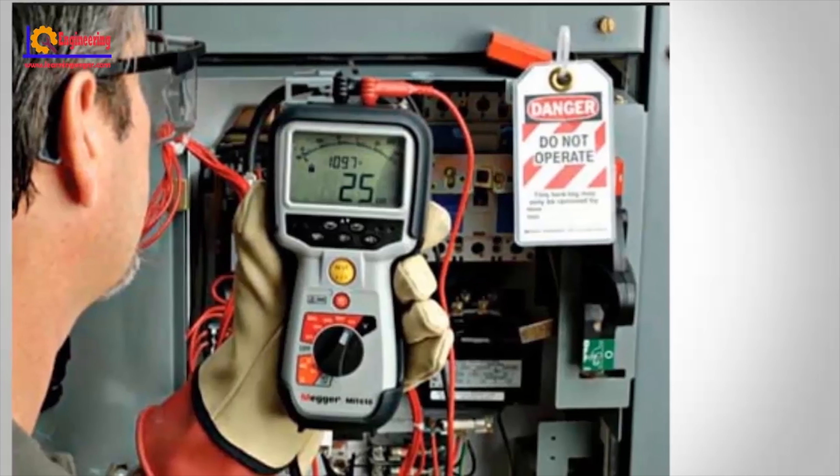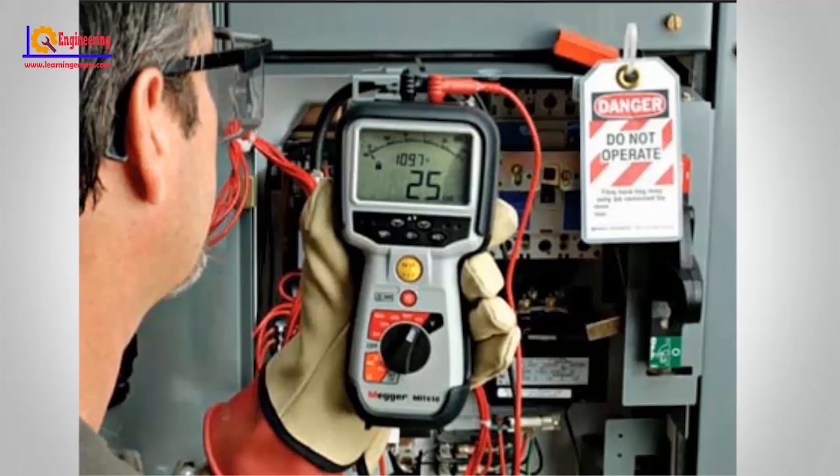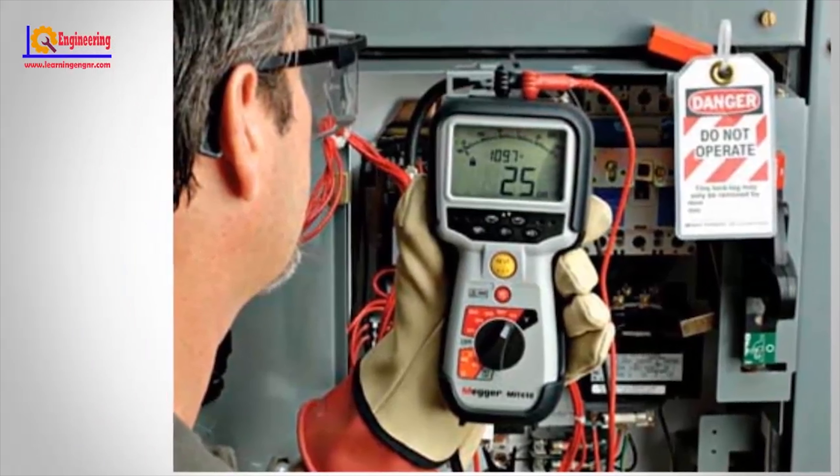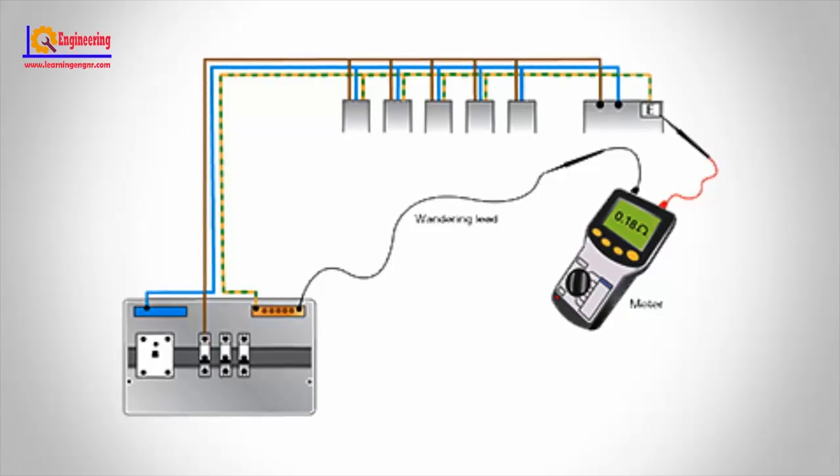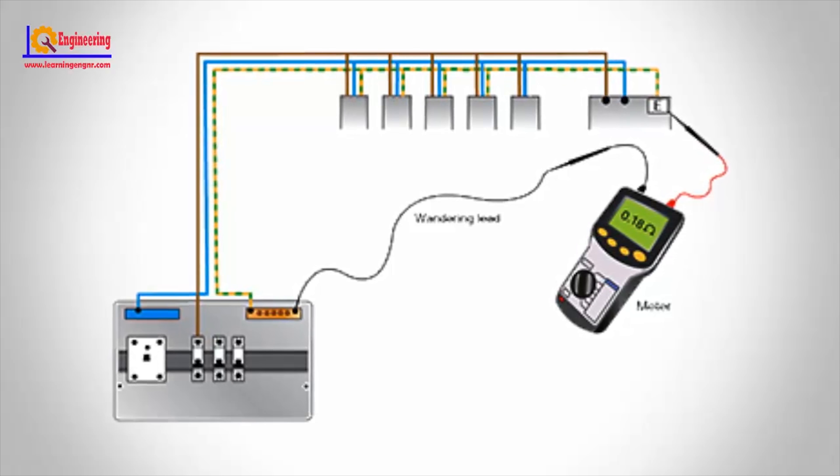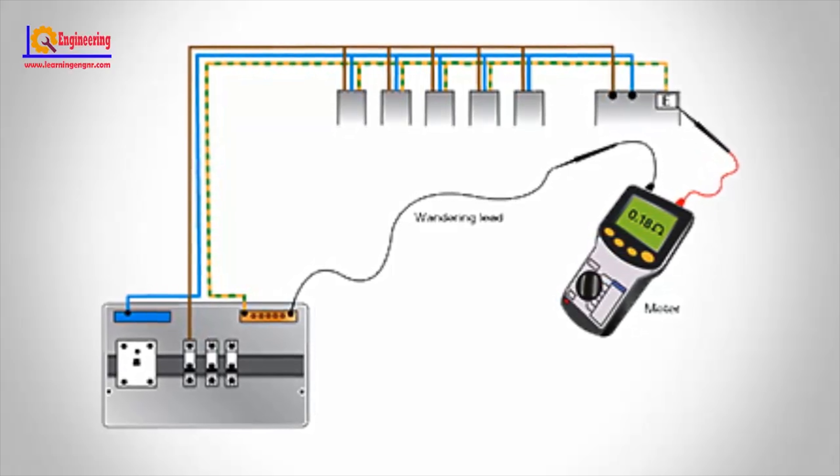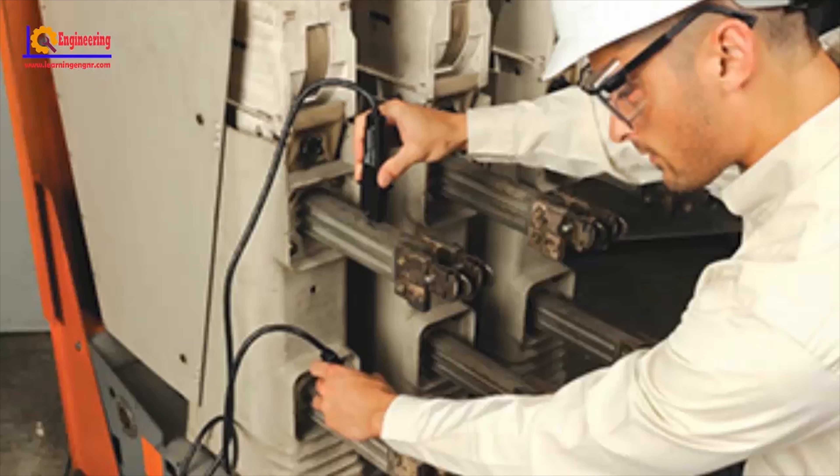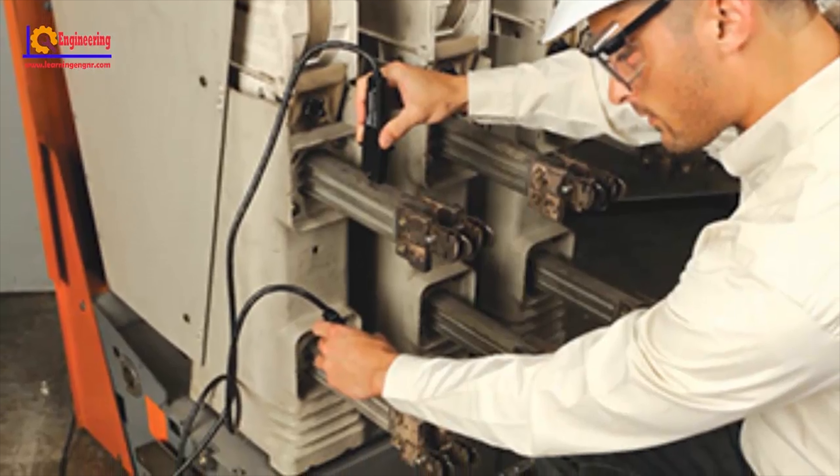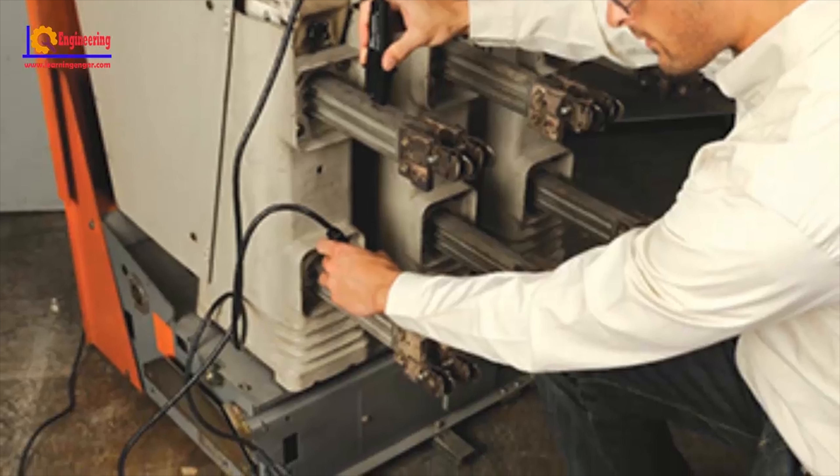Earth Continuity Test. This test is performed by measuring the resistance between the third pin ground and outside metal body of the product under test. The maximum acceptable value is generally 0.5 ohms,